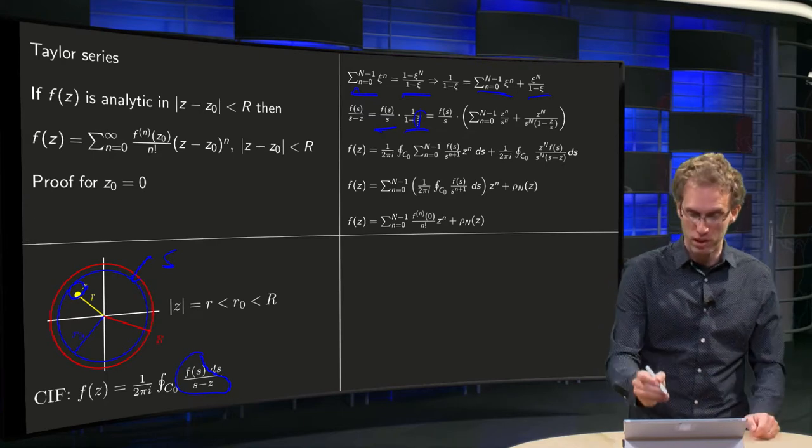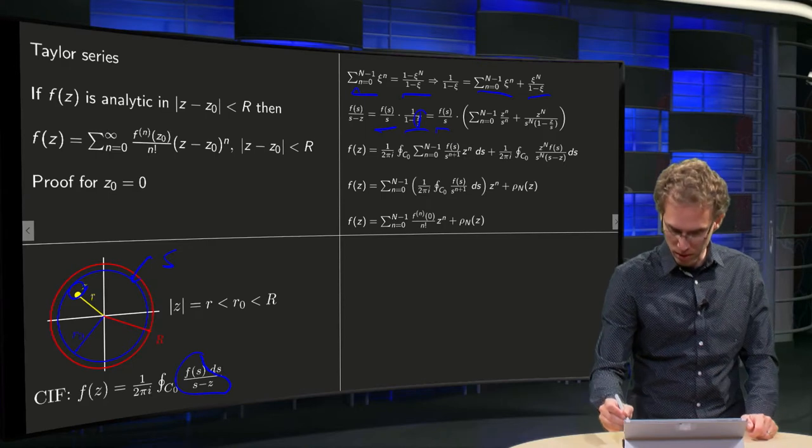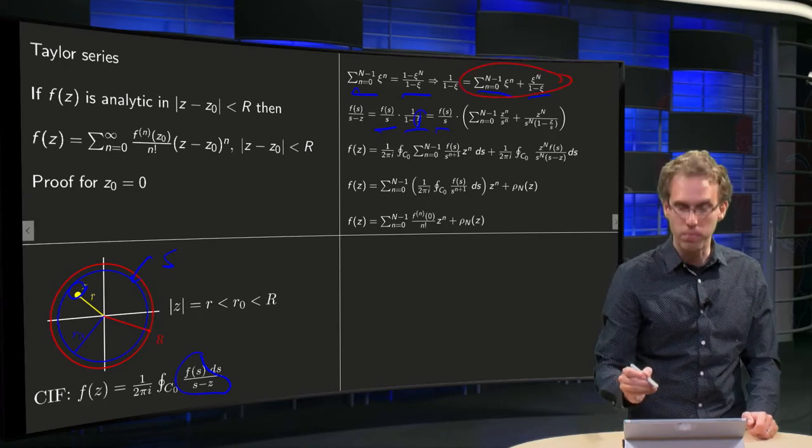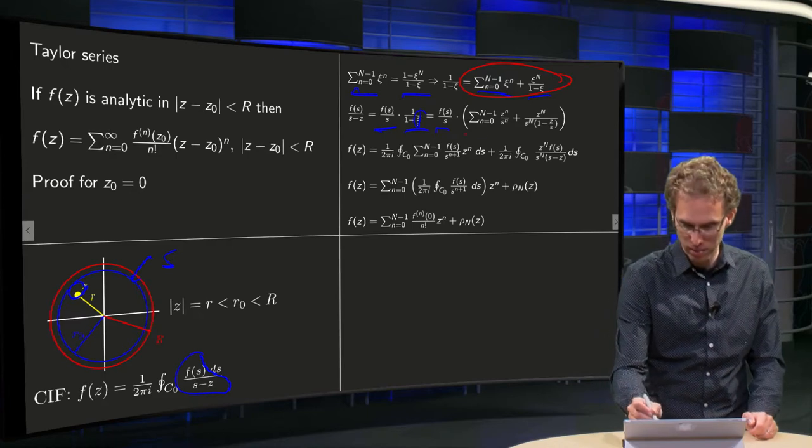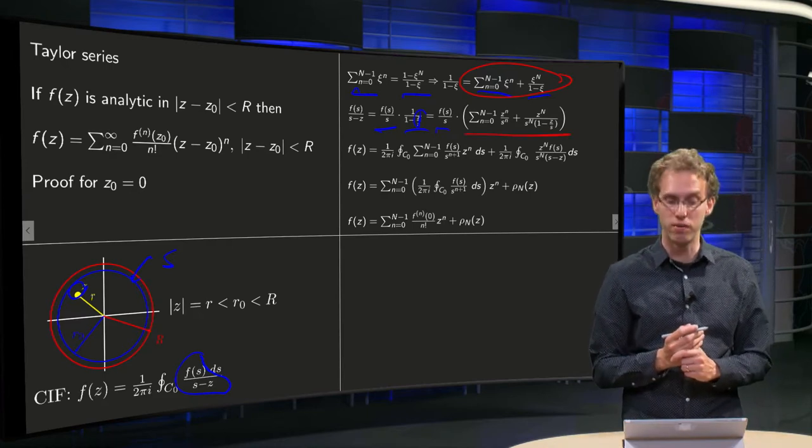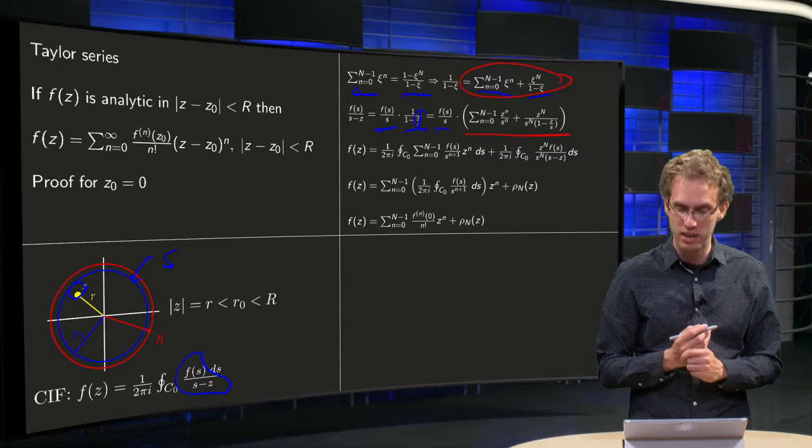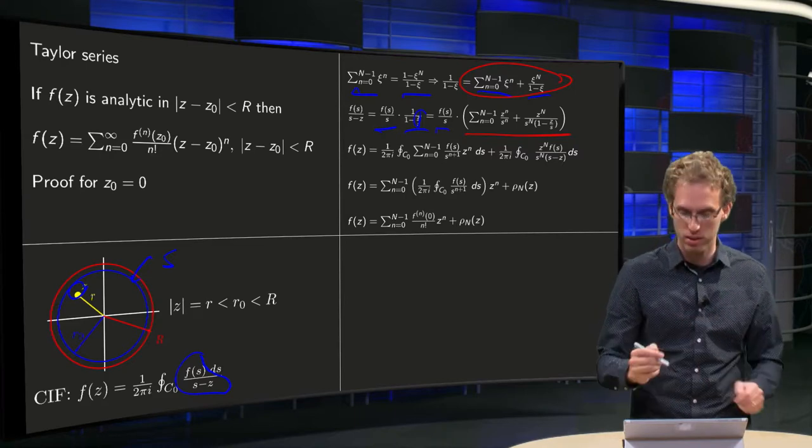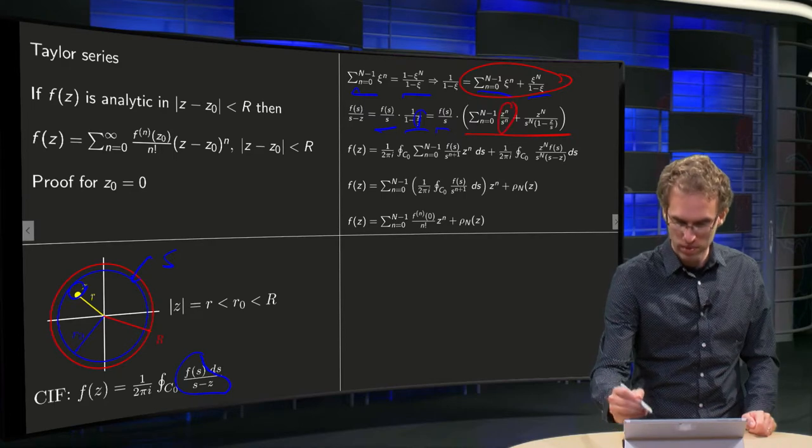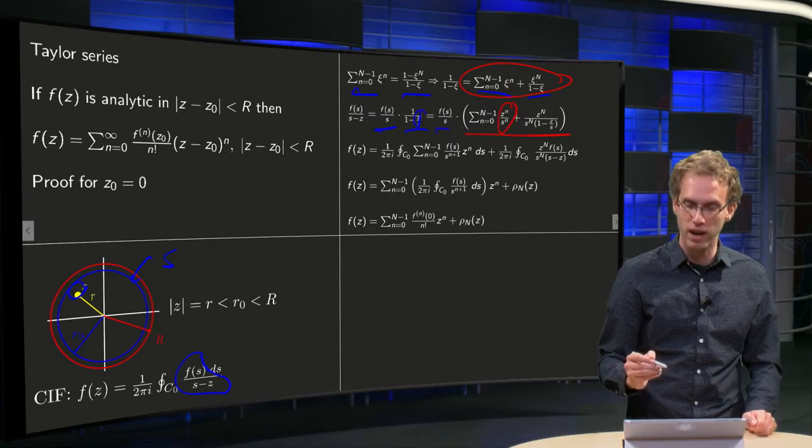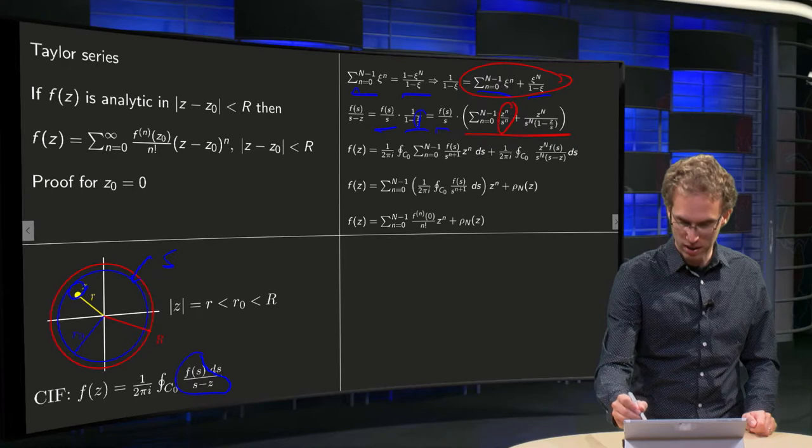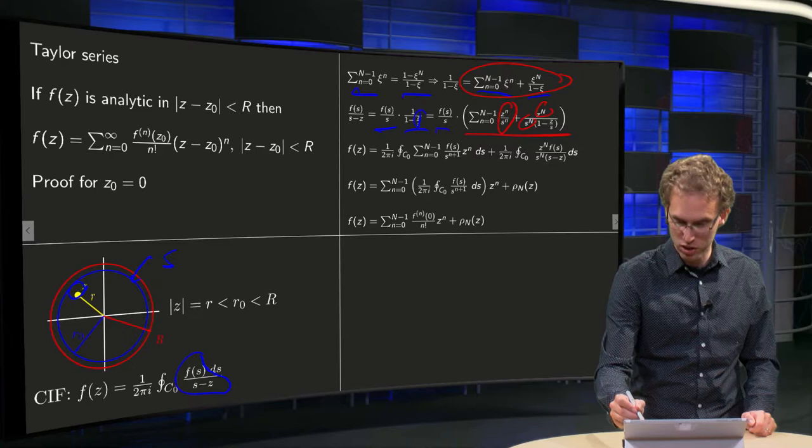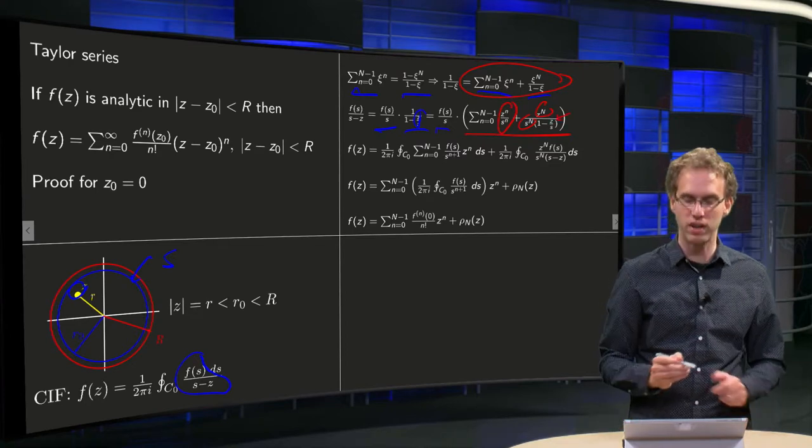So we just keep our f over s, and we will use the expression for 1 over 1 minus ξ, which we found, and just plug it in where we have ξ now equals z over s. So ξ to the power n yields z to the power n over s to the power n, and here we have again z to the power N over s to the power N with capital N, and 1 minus ξ equals z over s.